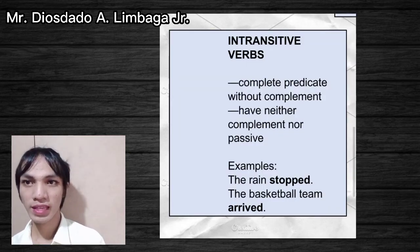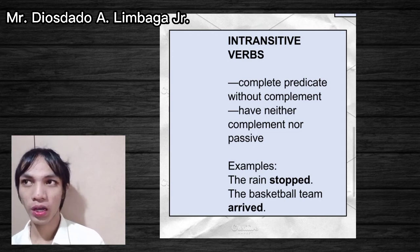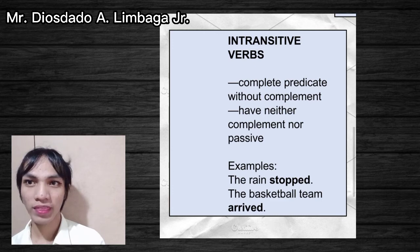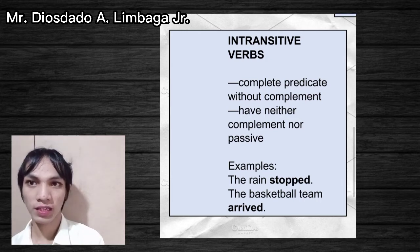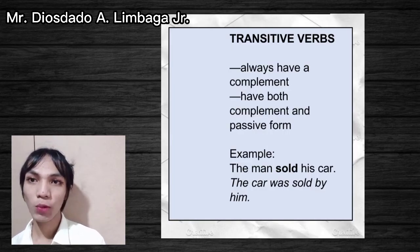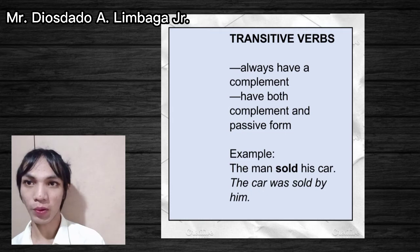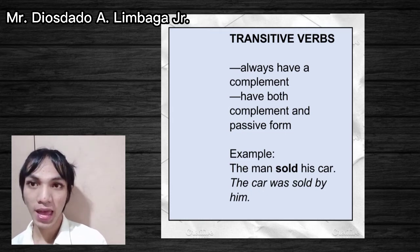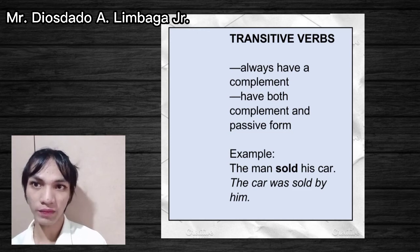Intransitive verbs have a complete predicate without a complement — they have neither complement nor passive. Examples: 'The rain stopped' or 'The basketball team arrived.' With the intransitive verbs 'stopped' and 'arrived,' the thought of the sentence is already complete without needing any complement. Finally, transitive verbs always have complements — they have both complement and passive form. Example: 'The man sold his car' — 'sold' is the transitive verb and 'his car' is the complement. In its passive form: 'The car was sold by him.'